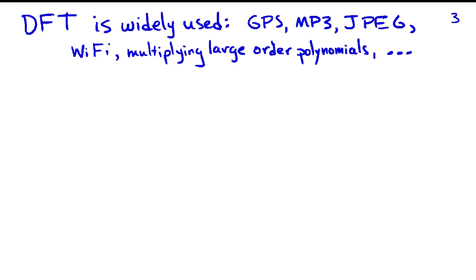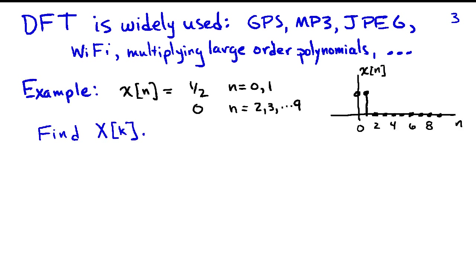The DFT is widely used everywhere — it's used to get the spectrum, but also in global positioning systems, MP3, JPEG, and Wi-Fi. There is a very long list of places where the DFT is actually used. So let's look at an example.